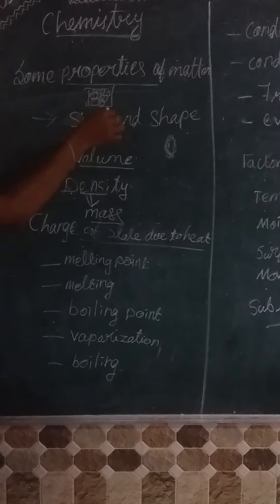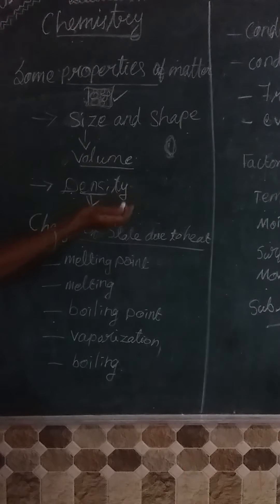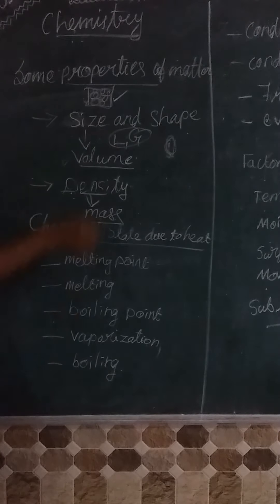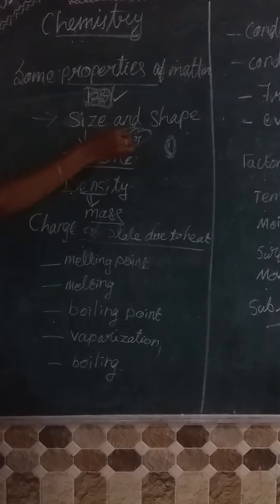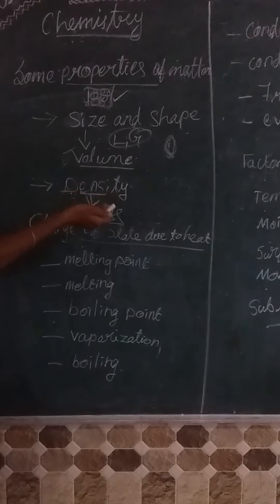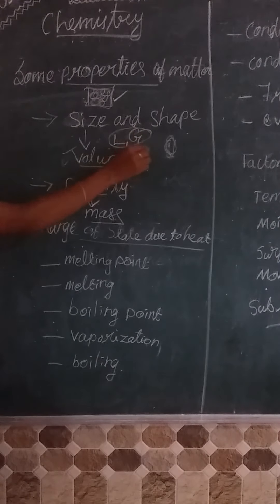For example, this is solid — so size is there, shape is there, mass is there. But in liquid: volume is there, but shape has no shape. Then gas? No — neither volume nor size and shape is there in the gas.